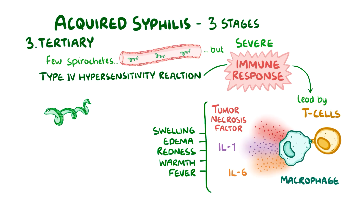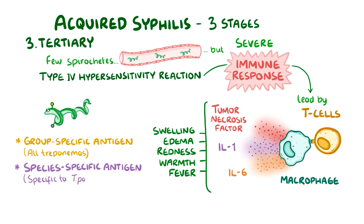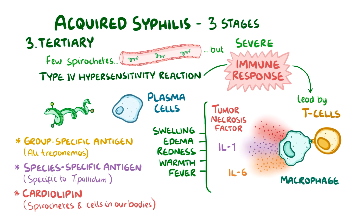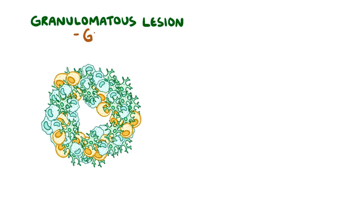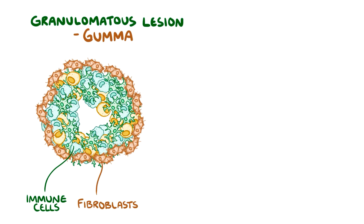T. pallidum has three main antigens: group-specific antigen, which are present in all treponemes; species-specific antigen, which are specific to T. pallidum; and cardiolipin, which is a lipid antigen present within the spirochetes as well as in the cells of our body. Plasma cells produce antibodies against these antigens. In some cases, the immune cells huddle around and form a granulomatous lesion called a gumma, which has lots of different types of immune cells surrounded by an outermost layer of fibroblasts. Often, there aren't any spirochetes at all in these lesions — it's just like the immune cells are getting overexcited. The tissue at the center of the gumma often ends up without oxygen, leading to coagulative necrosis.